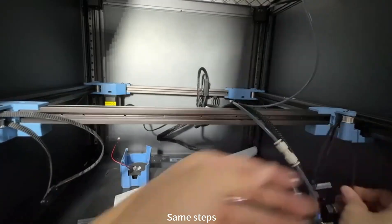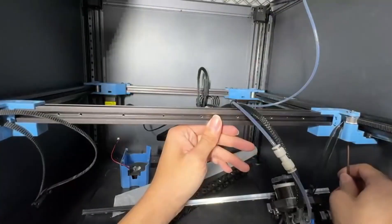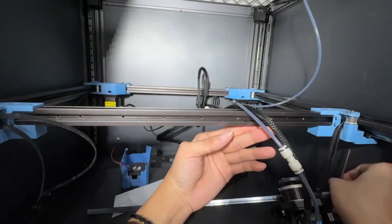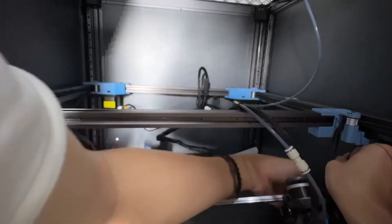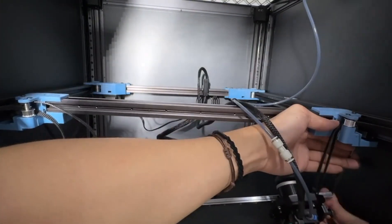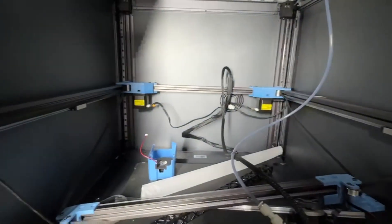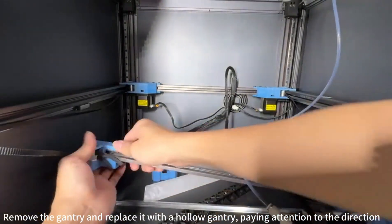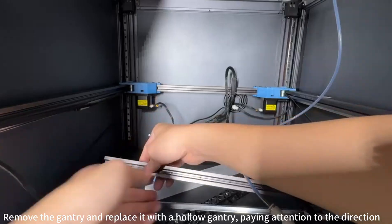Remove the pieces of M3 by 12 screws. Remove the gantry and replace it with the hollow gantry, paying attention to the direction.